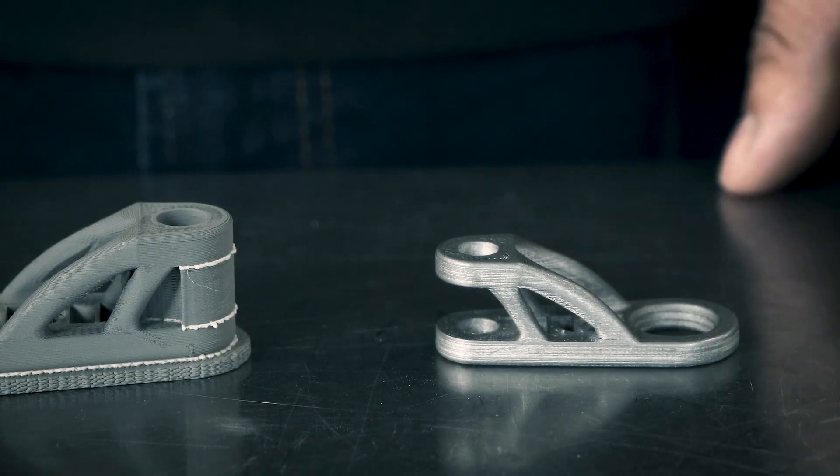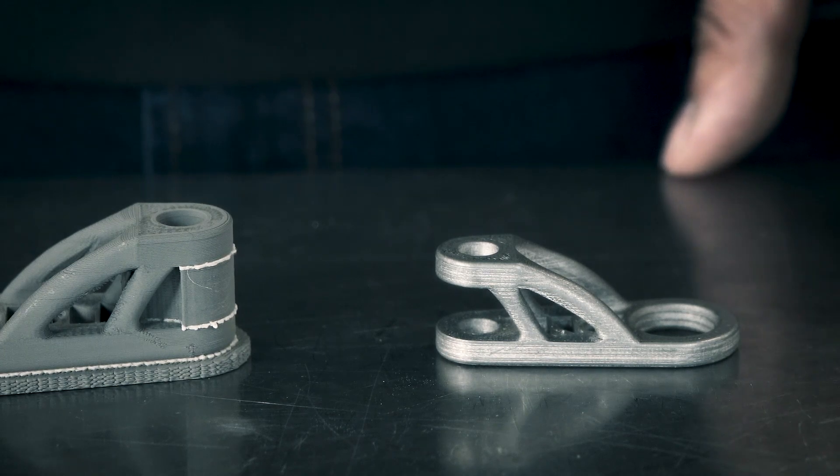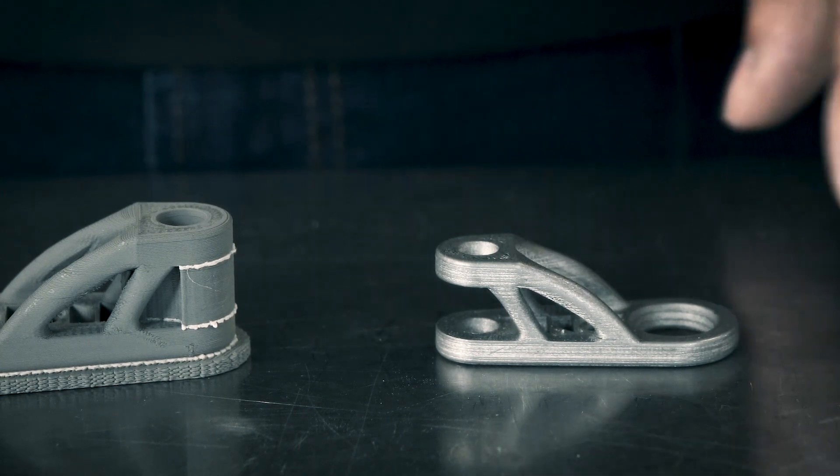As we can see it has a large gap here. If we were to print it without a support structure, this overhang would fall due to gravity.